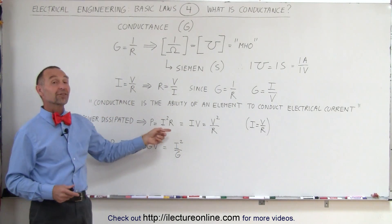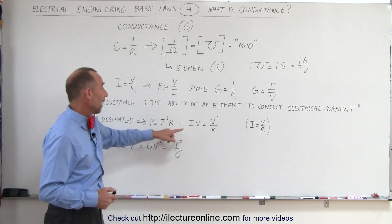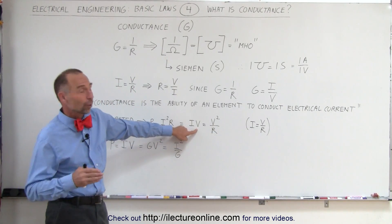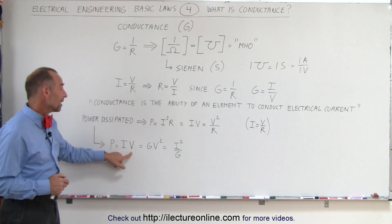Since power dissipated is I squared R, and using Ohm's law, we can also write it in terms of I times V, or V squared divided by R. We can then say that power is I times V,